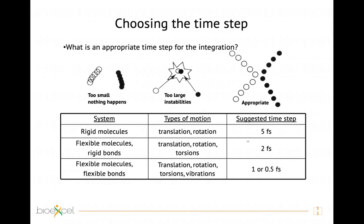If we consider all types of motion — including bond vibration, torsion, and translation — we probably need a time step of one femtosecond. If we only want to simulate torsion, rotation, and translation, we can go up to two femtoseconds. If we consider only translation and rotation, we can use up to five femtoseconds.